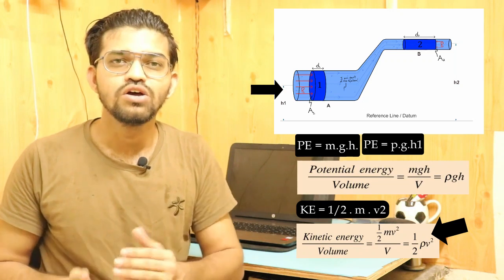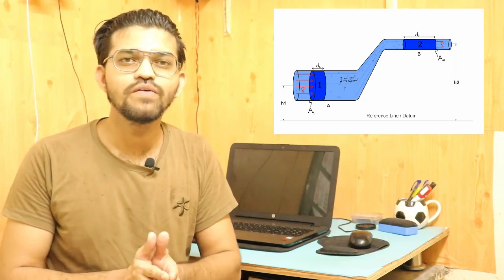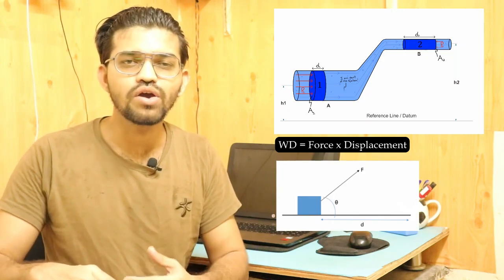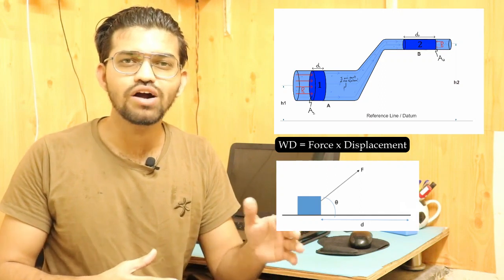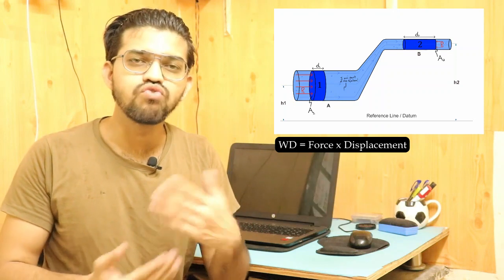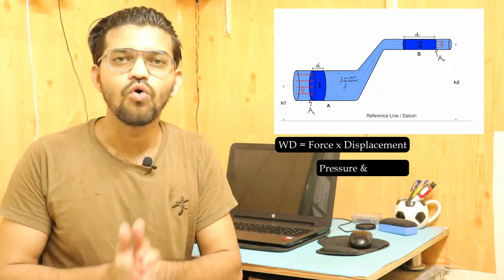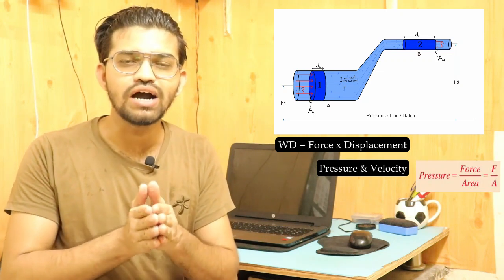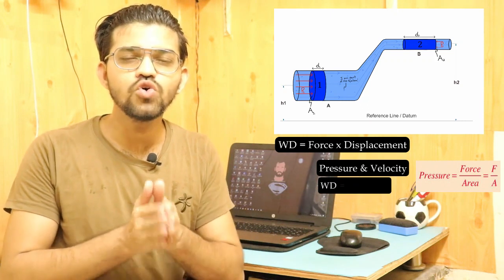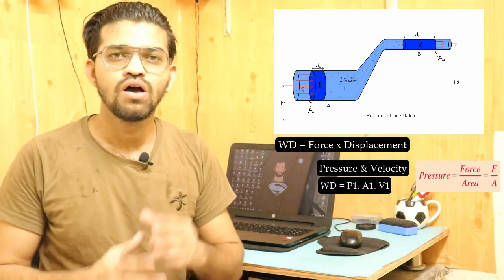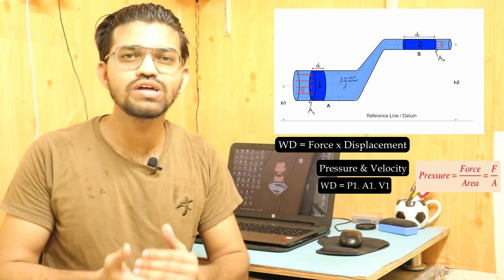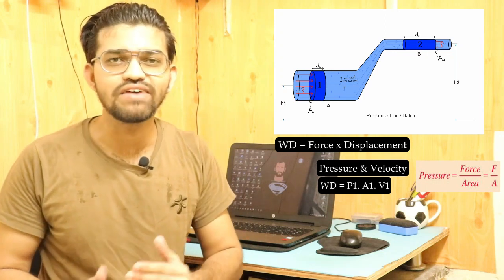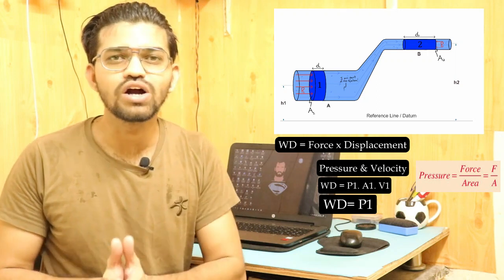For the work done, the basic formula is force times displacement. Here the work done is expressed in terms of pressure and velocity: work done equals pressure times area times velocity. Since from the continuity equation A₁V₁ equals A₂V₂, the area and velocity terms cancel from both sides, leaving only pressure P to represent the total work done per unit volume in Bernoulli's equation.